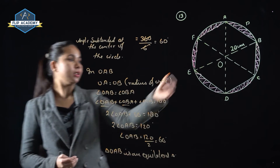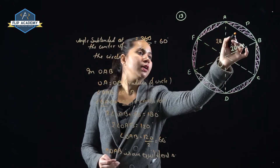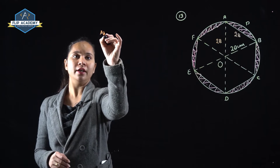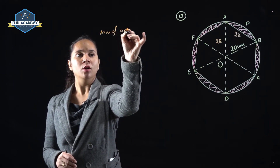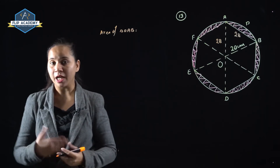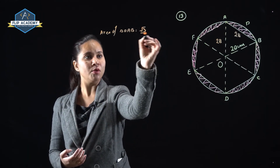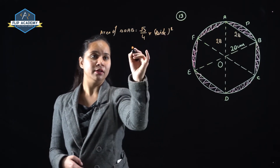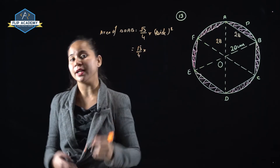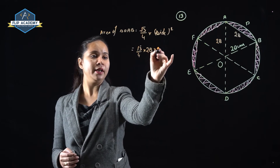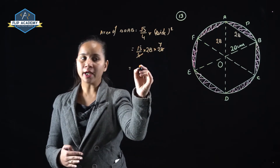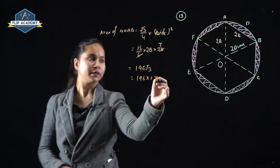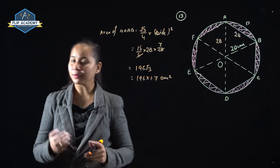Since triangle AOB is equilateral, if OA = OB = 28 cm, then side AB is also 28 cm. Area of triangle OAB = (√3 / 4) × side² — this is the formula for the area of an equilateral triangle. So Area = (√3 / 4) × 28² = (√3 / 4) × 784 = 196√3 = 196 × 1.7 cm².